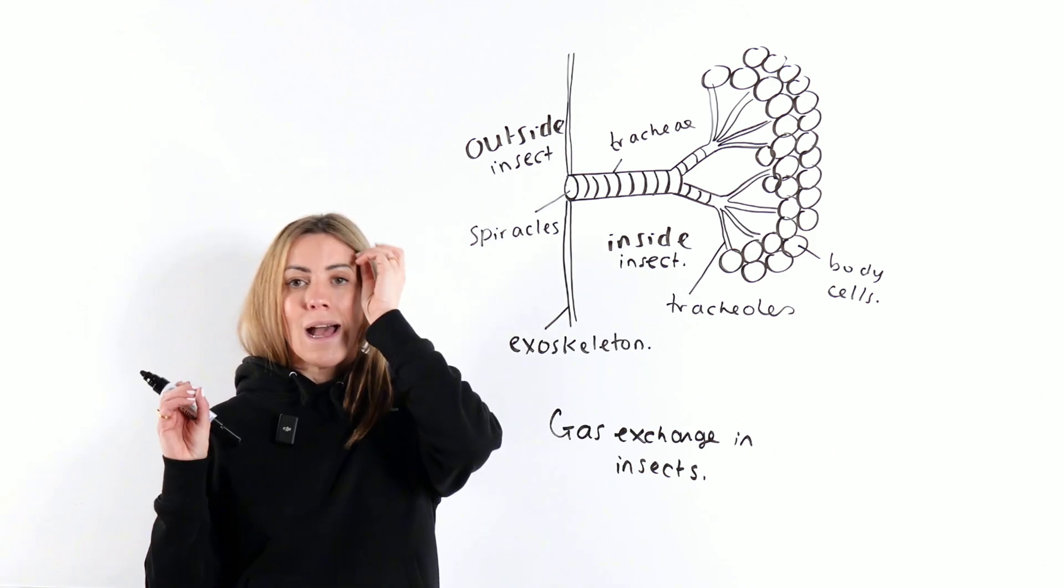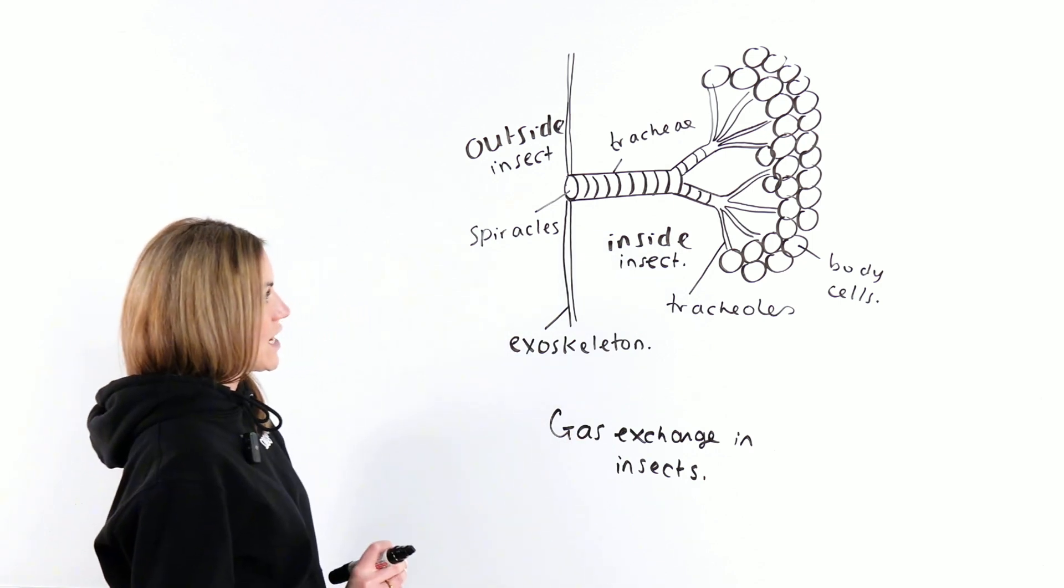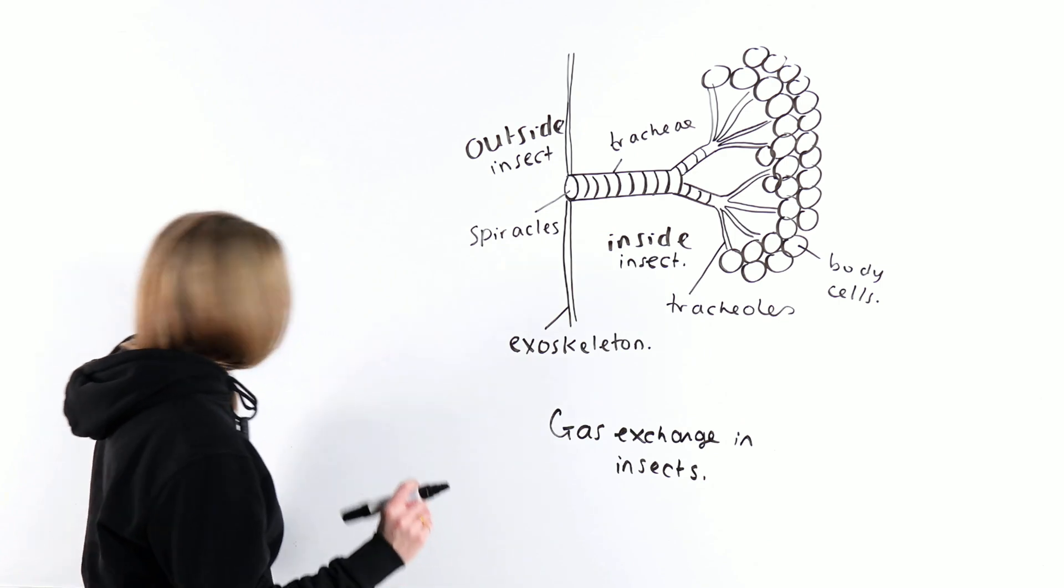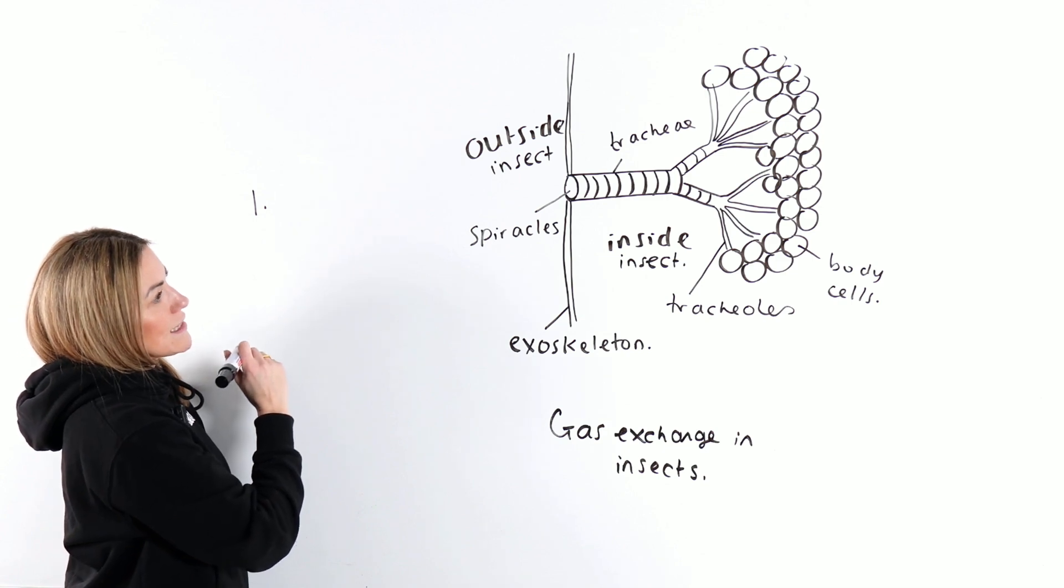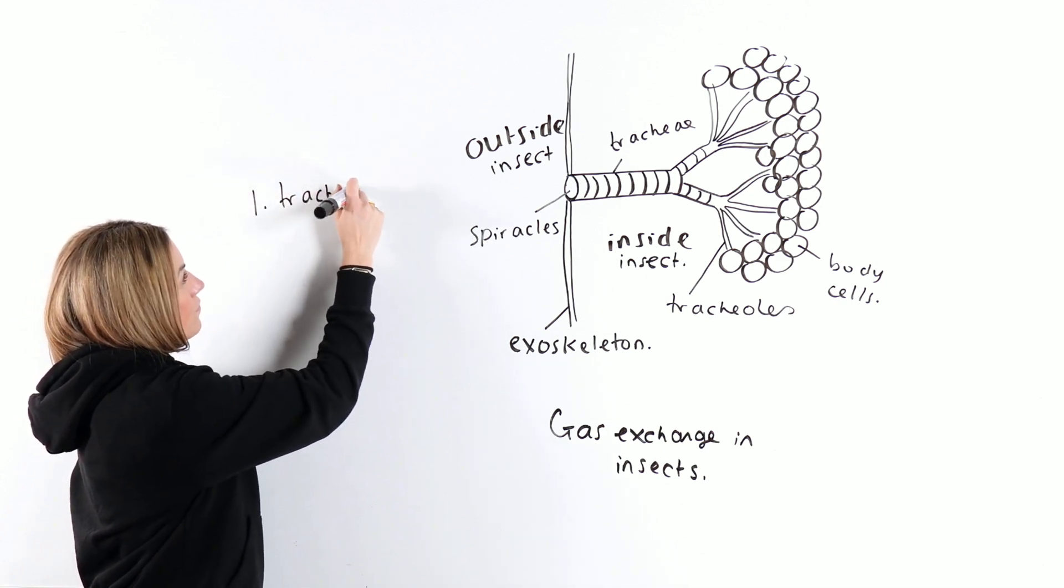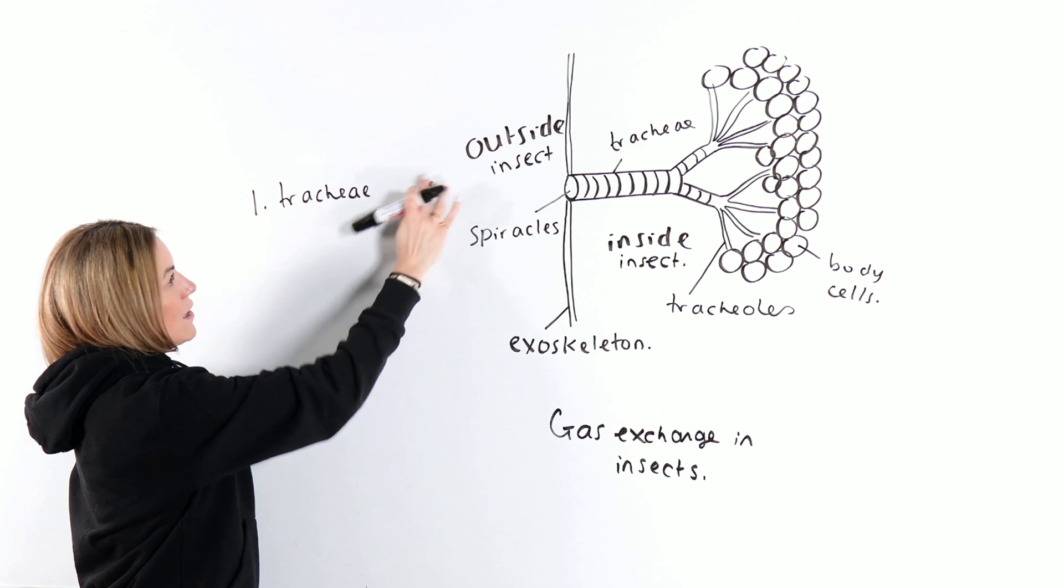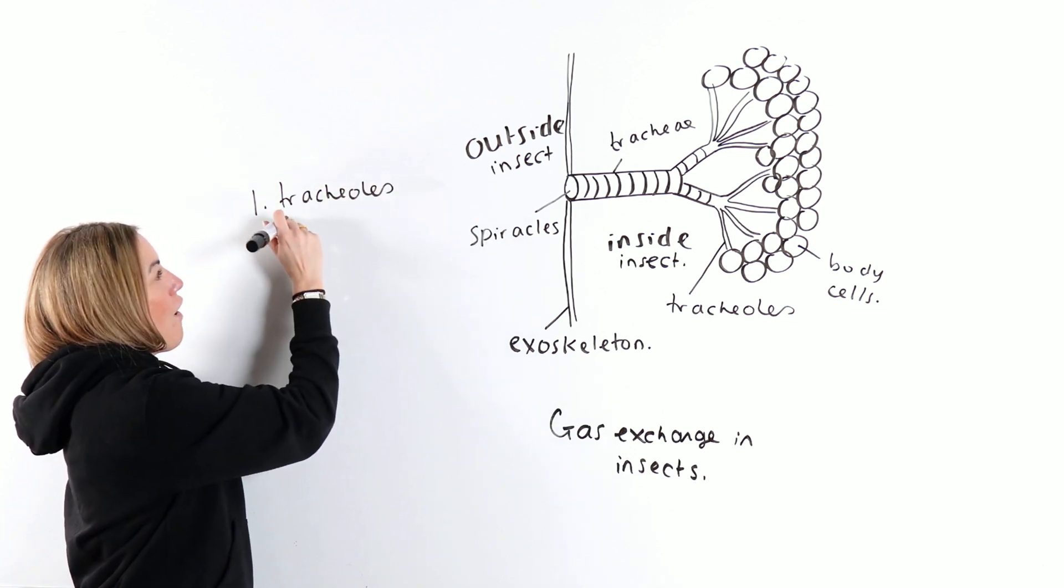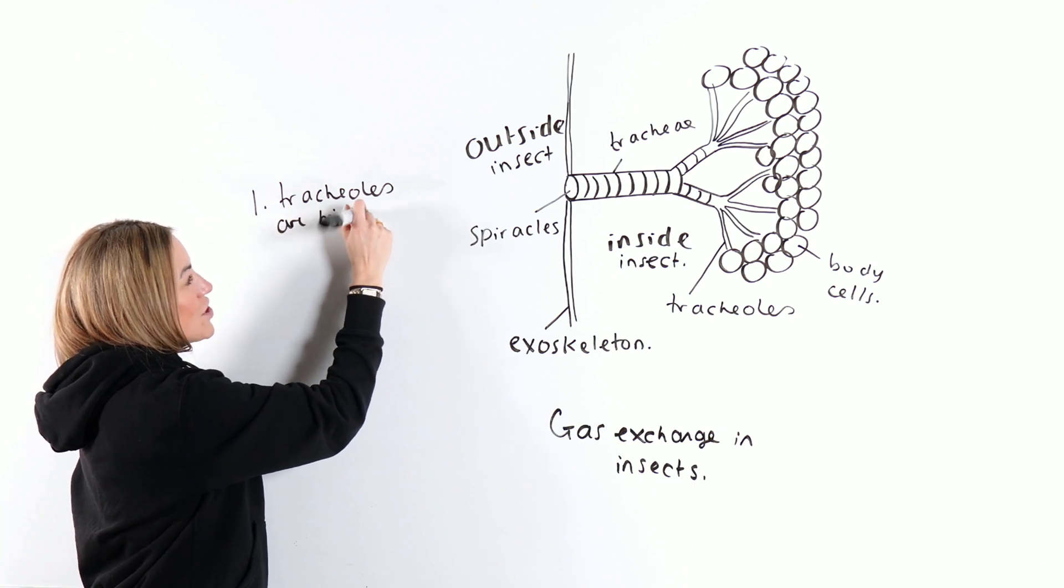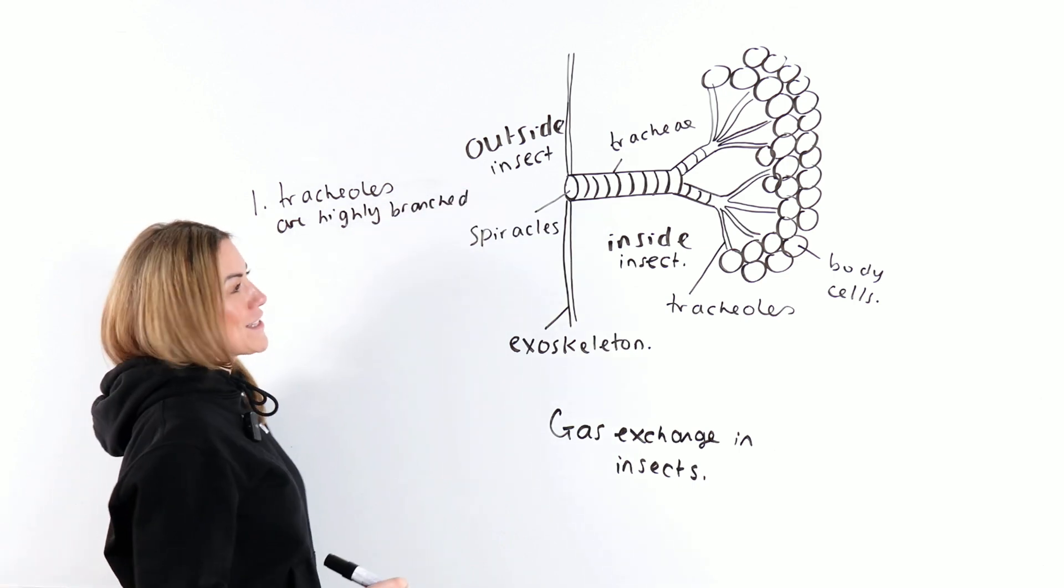Let's go through how this is adapted for efficient gas exchange. First, the tracheoles are highly branched. We don't want to mix up the trachea and the tracheoles.